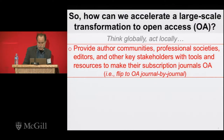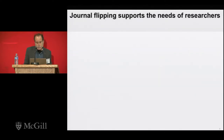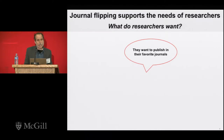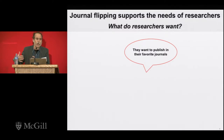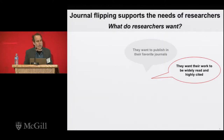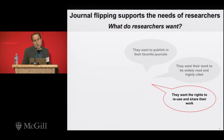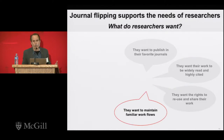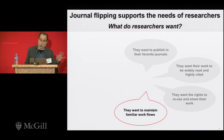The first question we need to understand is: what do researchers want out of their journals? When we talk to researchers, we find they want to publish in their favorite journals. They don't necessarily like the idea of switching to new journals or creating a parallel universe of open access literature. They really want the journals they've known and loved through their careers — journals with long histories — to become open access. They want their work to be widely read and highly cited, which is clearly in alignment with open access. They want the rights to reuse and share their work, and they want to maintain familiar workflows. They like peer review as it currently stands.